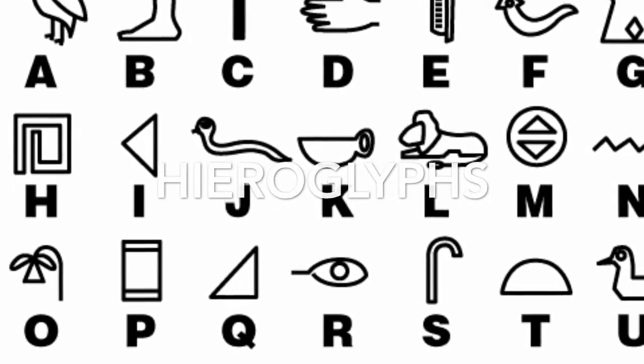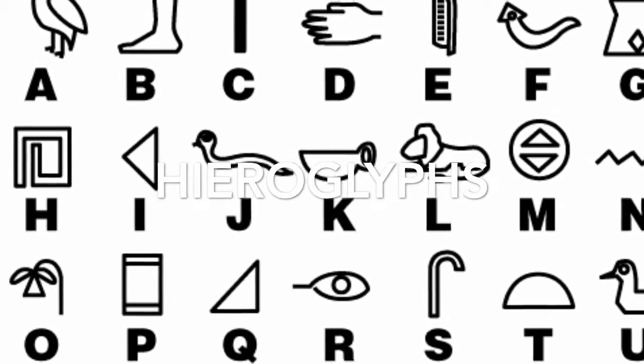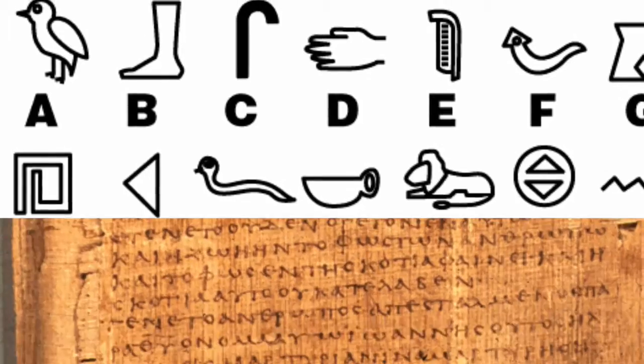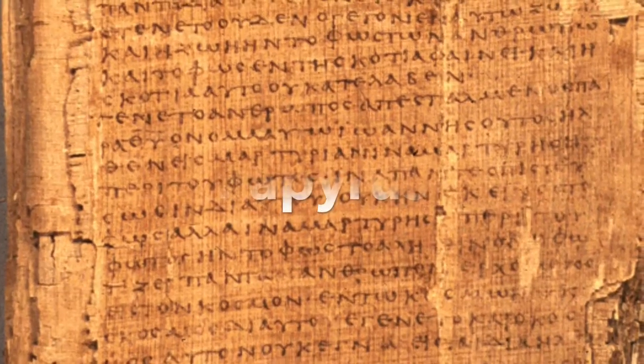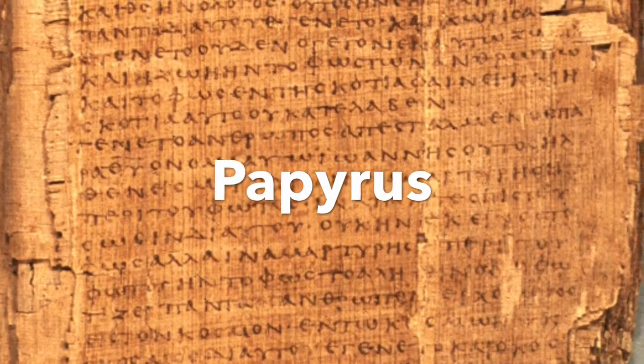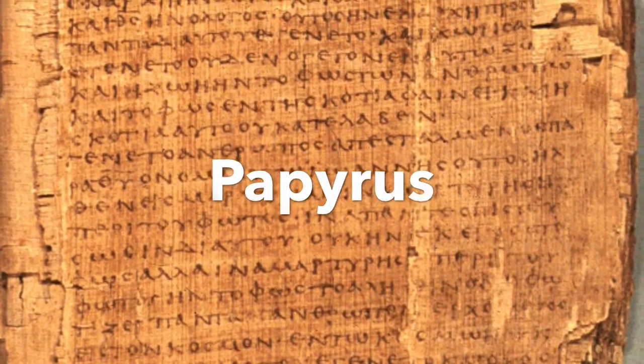Pictures and written symbols that stand for ideas, things, or sounds. An early form of paper made from the reed plant found in the marshy areas of the Nile Delta.